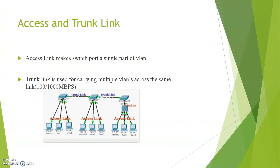Now let us understand the difference between access and trunk links. An access link makes a switch port part of a single VLAN, in which end workstations are connected to the access port. A trunk link is a high-speed link that exists between two switches for carrying multiple VLANs across the same link — it is a switch-to-switch communication.